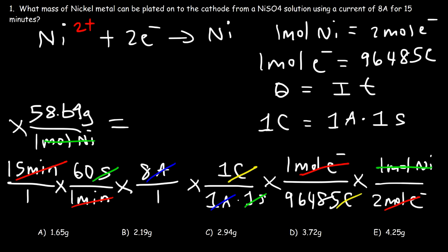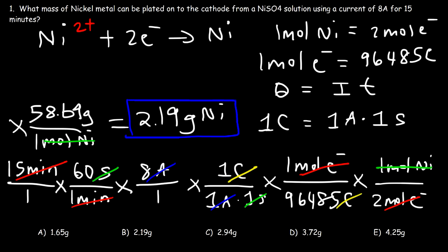The calculation is 15 times 60 times 8, divided by 96,485, divided by 2, then times 58.69. This gives 2.19 grams of nickel metal. That's how you calculate the mass of a metal plated onto a cathode given the electric current and time, so B is the right answer.